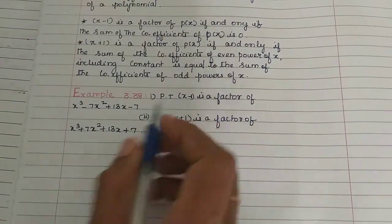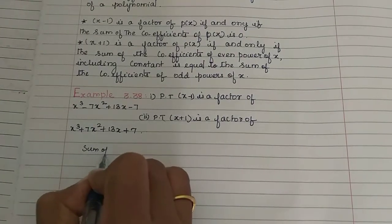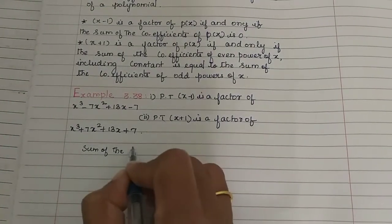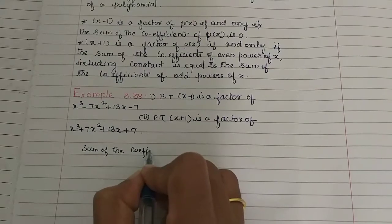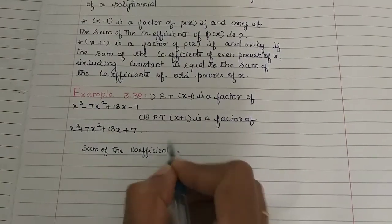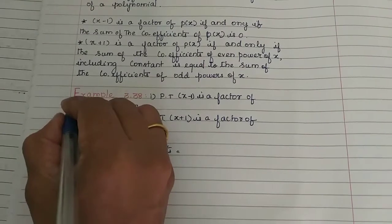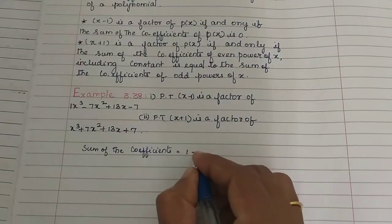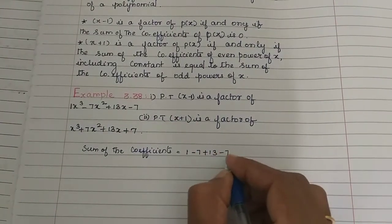We check: x minus 1 is a factor if the sum of the coefficients equals 0. The sum of the coefficients is equal to: the coefficient of x³ is 1, then minus 7, plus 13, minus 7.